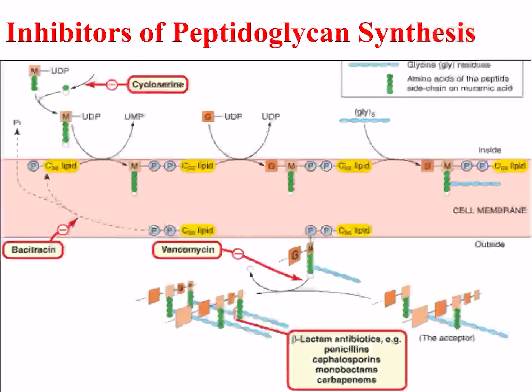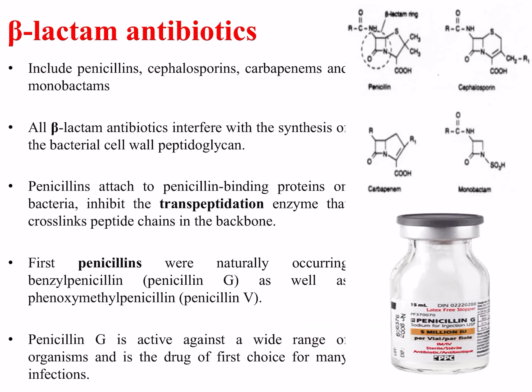These mechanisms are illustrated in the diagram on this slide. Each drug can be seen in a red circle indicating where in the synthesis pathway it interferes. Beta-lactams are probably the most famous family of antibiotics and include penicillins, cephalosporins, carbapenems, and the monobactams.